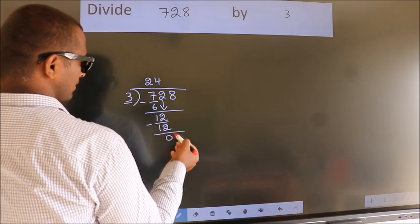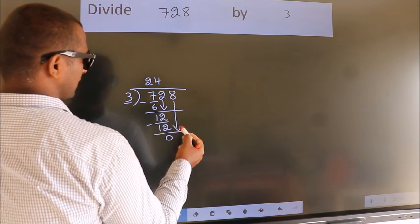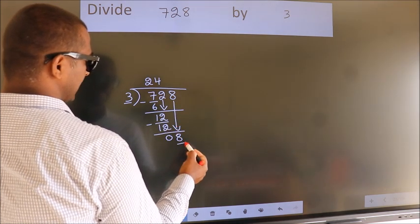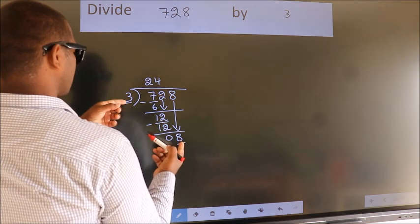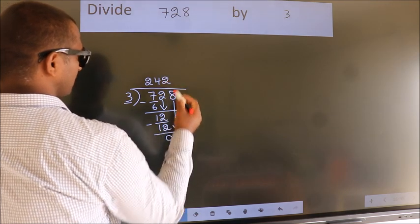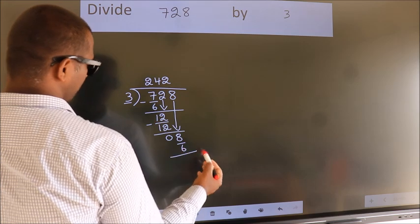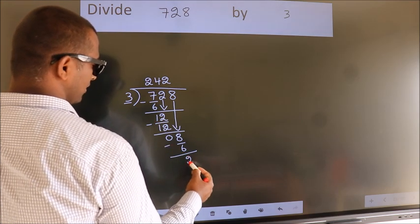After this, bring down the beside number. So, 8 down. So, 8. A number close to 8 in 3 table is 3 twos, 6. Now, we subtract. We get 2.